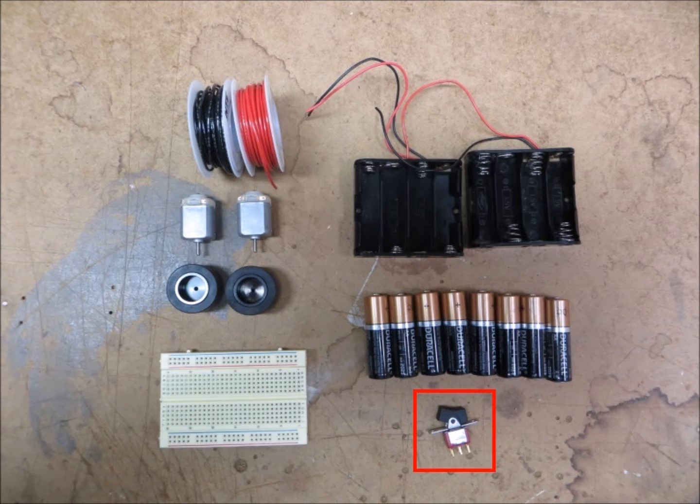To keep things simple, we decided to wire each motor to its own dedicated battery pack. However, we still needed to be able to turn on both motors at the same time. Since we had two separate circuits, one for each motor, we needed a double pole switch.